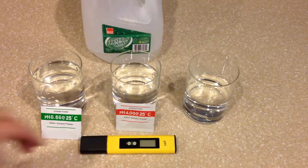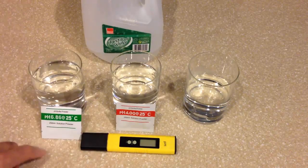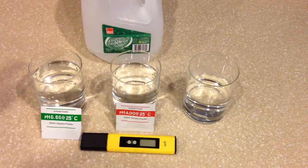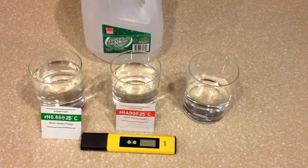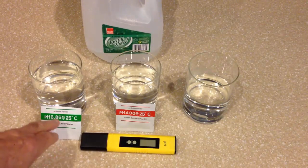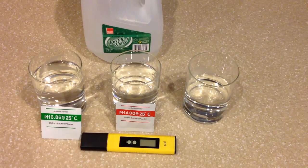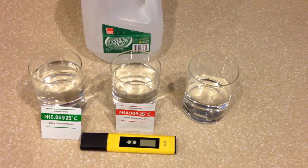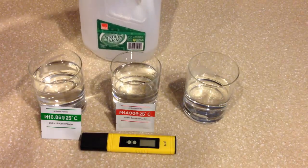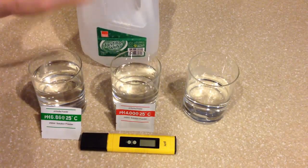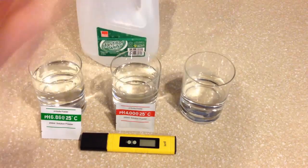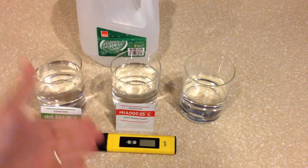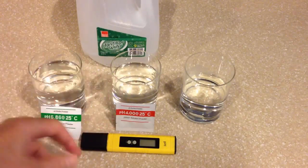As you can see in front of you, I have the meter itself, and then I have the two calibration powders that I've mixed into these two glasses. Each glass contains its respective powder, the 6.86 and the 4.0 calibration solution, mixed in 250 milliliters of distilled water, which is what this gallon jug is back here. This glass is simply filled with distilled water, so I can clean the probe between inserting the probe into each one of these respectively.